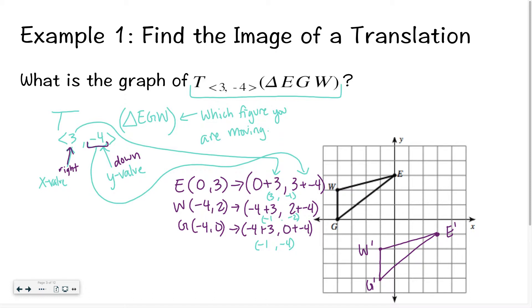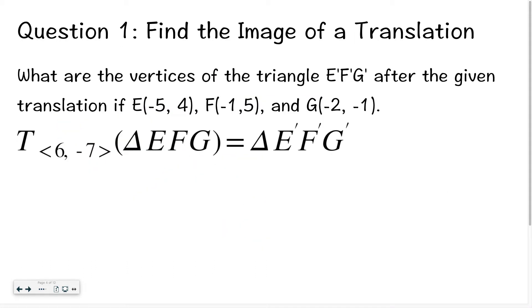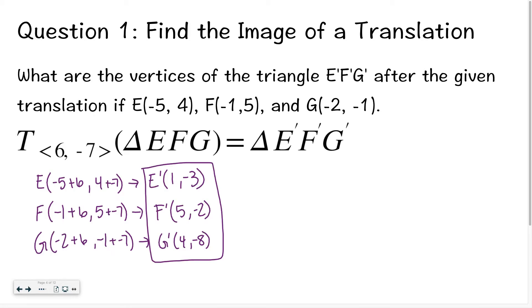Sometimes I will give you just a picture and say graph this translation. And sometimes I will give you the coordinates and say what are the new coordinates of this translation. That's why I did both here in this example. You're not typically going to do both the coordinates and the graph all at once, but I wanted to show you both ways. Why don't you do this first question. Hopefully you ended up with E' at (1,-3), F' at (5,-2), and G' at (4,-8). If not, please be sure to reach out for some help and I'm happy to help you.